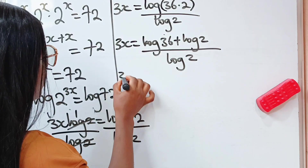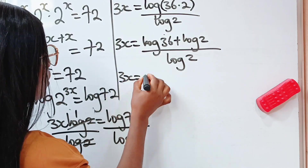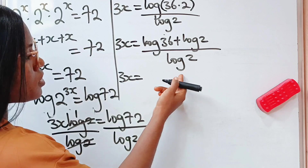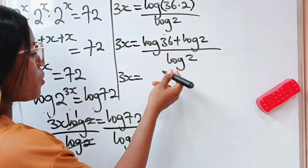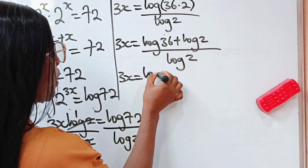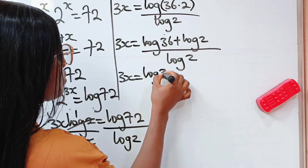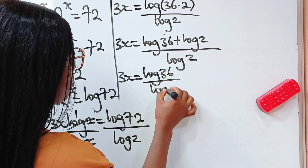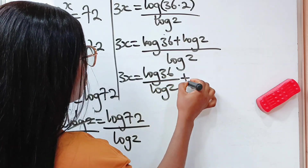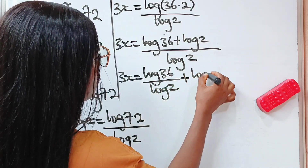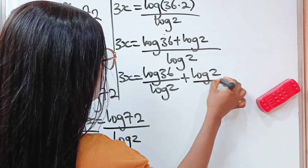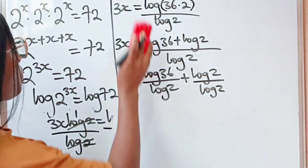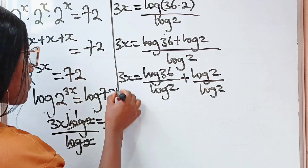So we have that 3x is equal to — we are going to distribute the denominator — so we have log 36 divided by log 2 plus log 2 divided by log 2 as well.